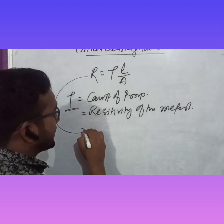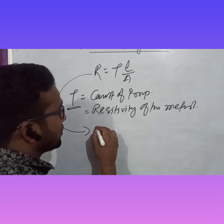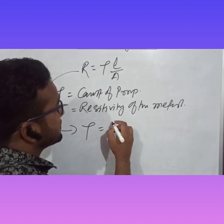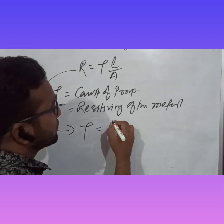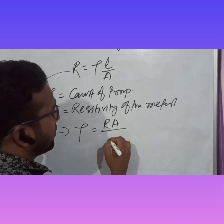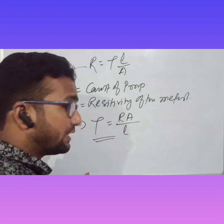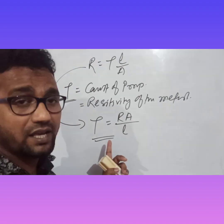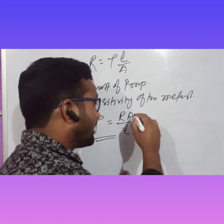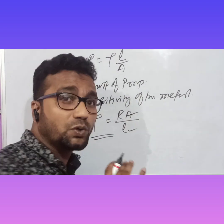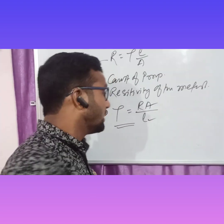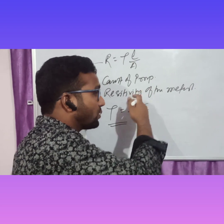This formula R = ρL/A can be used to find the resistivity mathematically. Importantly, resistivity does not depend on any dimension of the material — it is independent of area and length — but it does depend on the nature of the material, composition, and temperature.